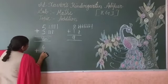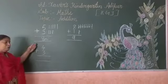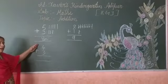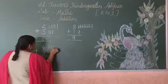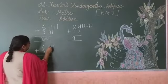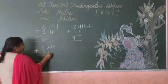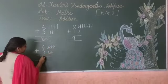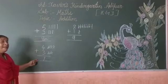4 plus 3. Count what is on top — how many are there? 4. And 1, 2, 3 below. Count both together: 1, 2, 3, 4, 5, 6, 7. Number 7. So 4 plus 3 equals 7.